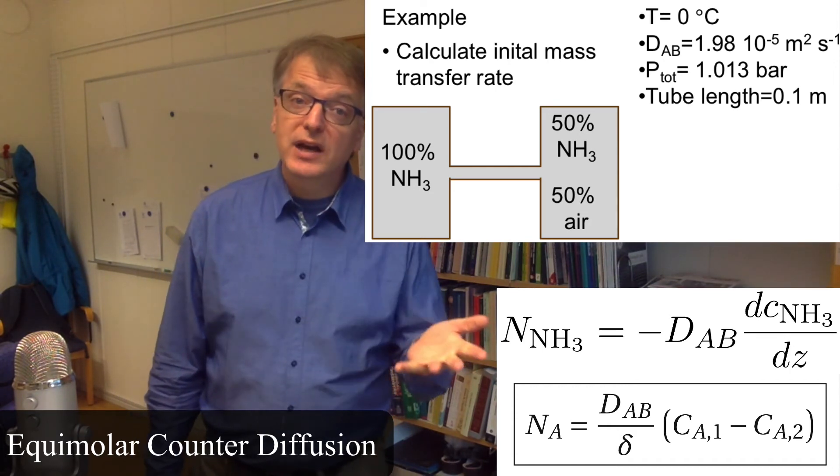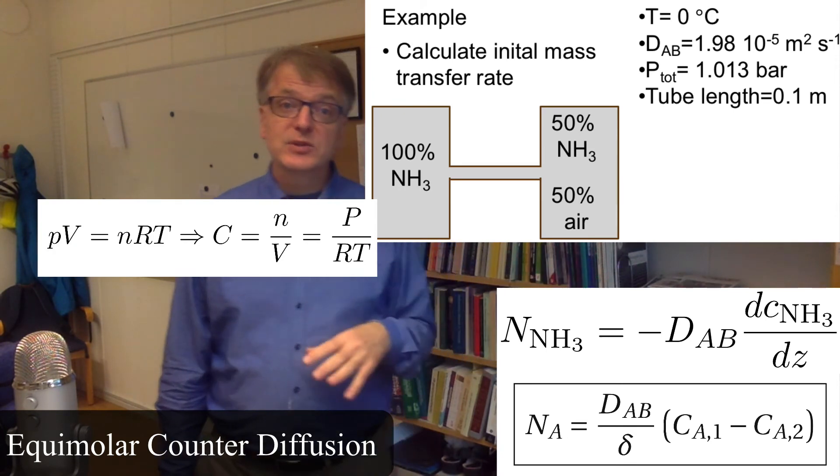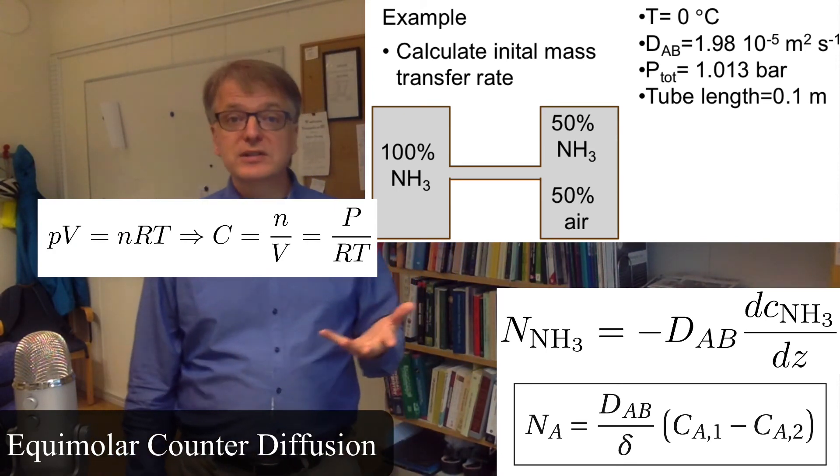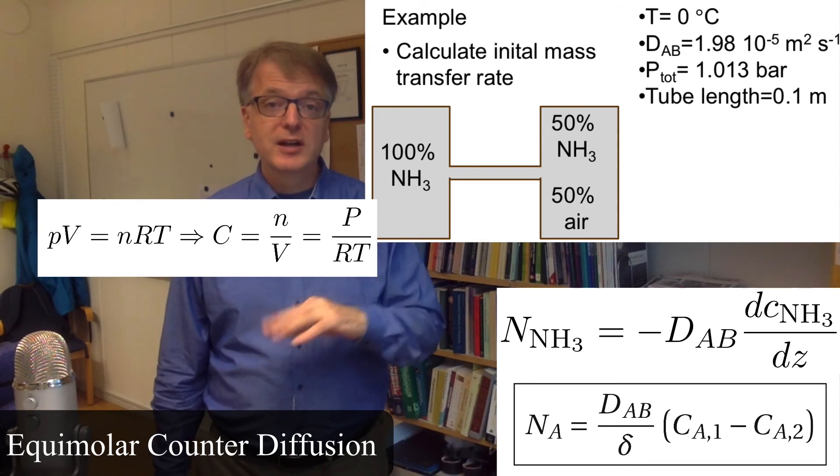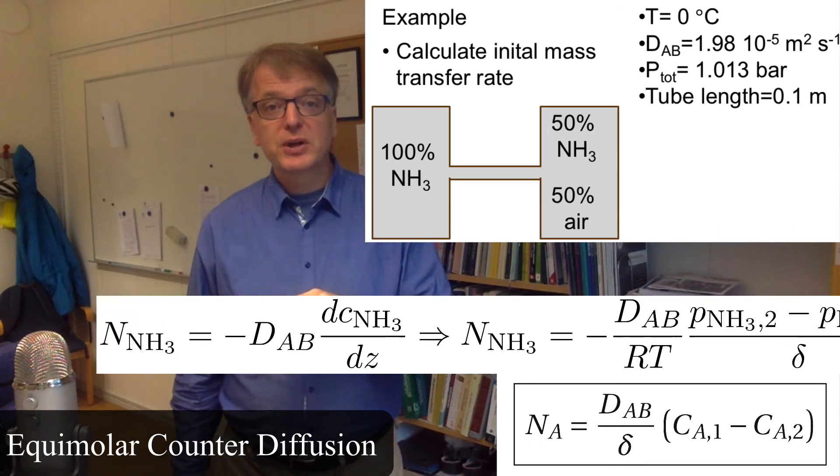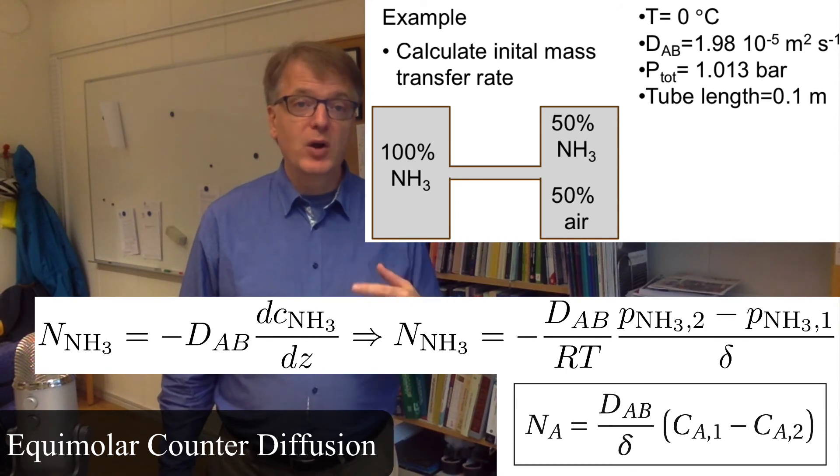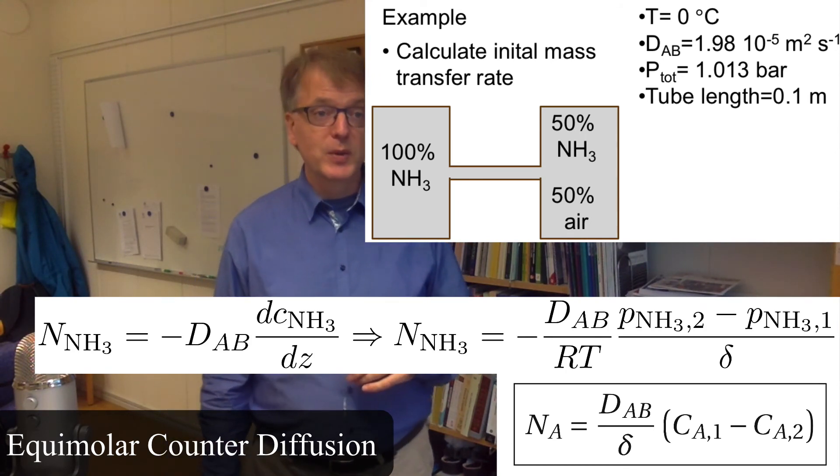Well, we use the ideal gas law and say PV equals NRT, and concentration is N divided by V. So concentration is also P divided by RT.